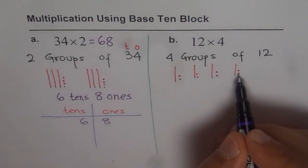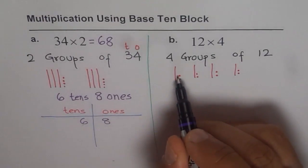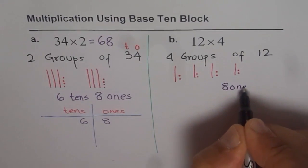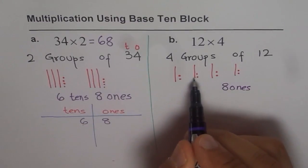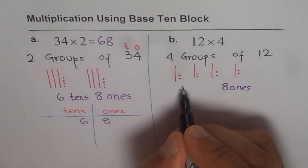Ones, let's start with ones. 1, 2, 3, 4, 5, 6, 7, 8. We get 8 ones and 1, 2, 3, 4. 4 tens.